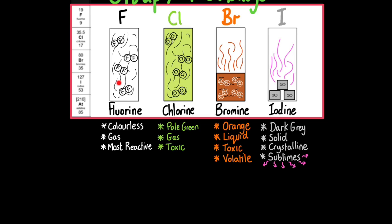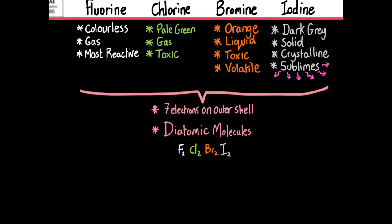So notice how the color changes as you go down the group, and the state changes, going from gas, gas, to liquid, to solid. Colorless, pale green, orangey brown, gray, but sublimes producing purple vapors. All the halogens have seven electrons on their outer shell. That is why they're in group seven. And that also explains why they're highly reactive. They only need one more electron to complete their outer shell.